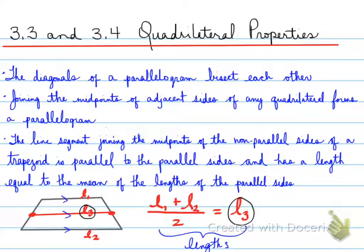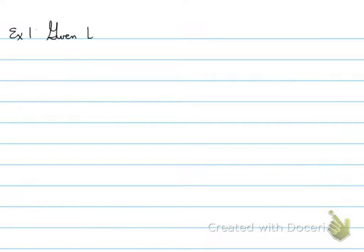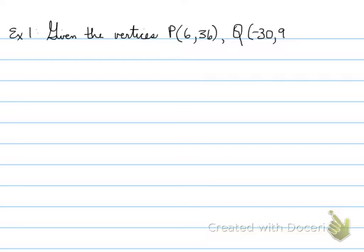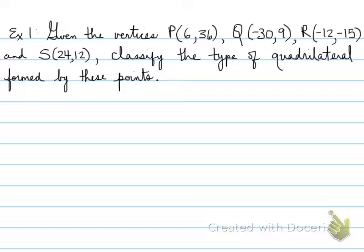In quadrilateral properties, we're specifically dealing with lengths and slopes — that's the common theme here. In example number one, you're given vertices P, Q, R, and S, and you're to classify the type of quadrilateral formed by these points. The first step is to graph the points — take a sketch so you can connect the proper letters.